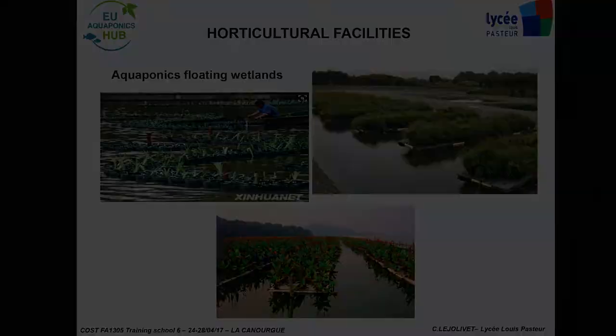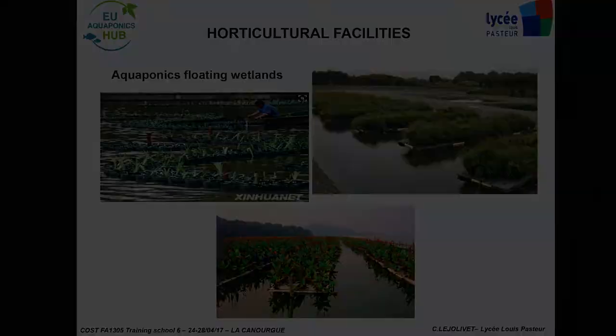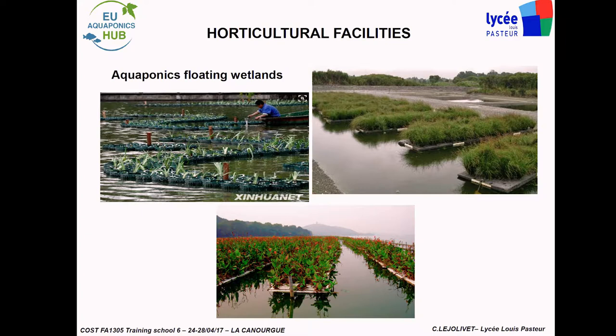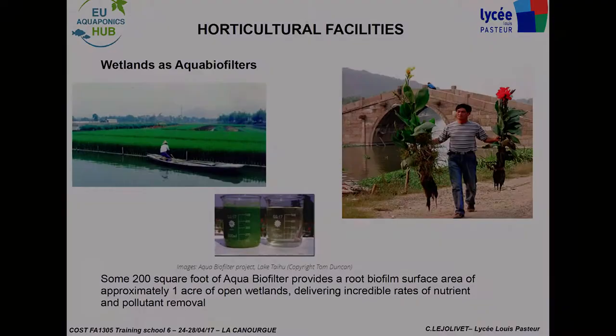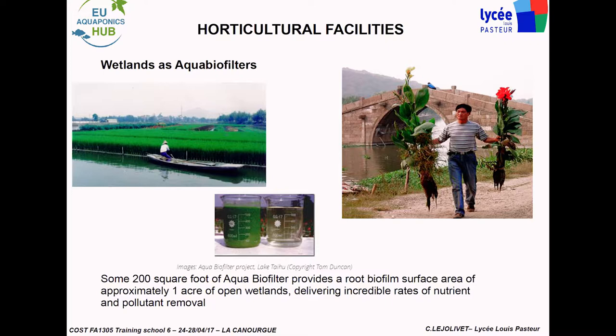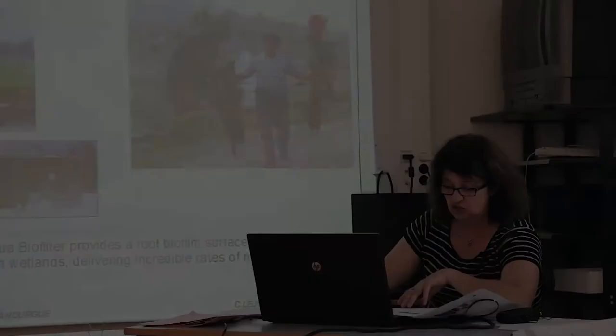What about aquaponic floating wetlands? They are often created to improve water quality, and are also interesting for biodiversity — providing habitat for birds and amphibians. As Pierre said yesterday, they can be used for rice and to mop up pollutants in urban areas.